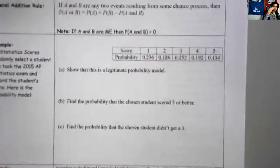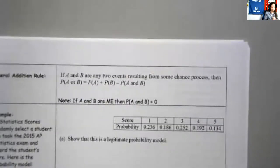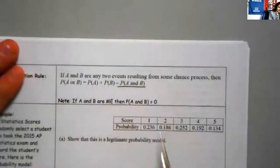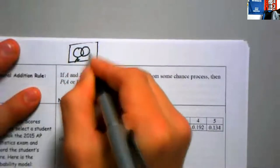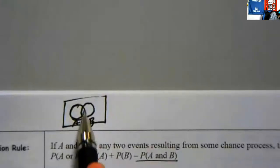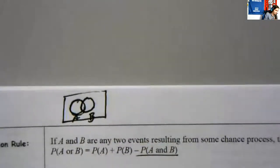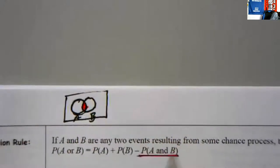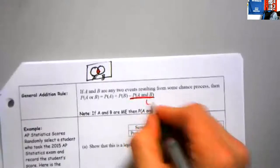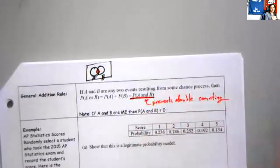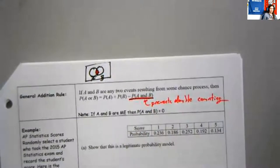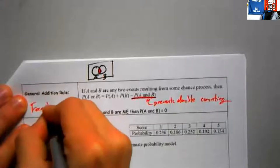I've got one more rule for you, which is called the general addition rule. If we have two events A and B and I want to know the probability of A or B, then I've got the probability of A plus the probability of B minus the intersection. Why are we subtracting? If you count everything in A and you count everything in B, what we don't want to do is count the folks in the middle twice. That subtraction prevents double counting. So: P(A or B) = P(A) + P(B) − P(A and B). This is on your formula sheet.